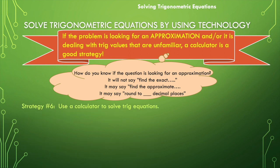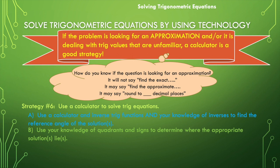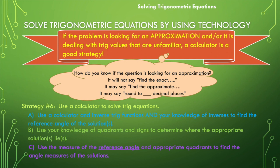So how do we go about this process? First, we will use a calculator and inverse trig functions and our knowledge of inverses to find the reference angle of the solution. Second, we're going to use our knowledge of quadrants and the signs of the trig functions to determine where the appropriate solutions lie. Third, we will use the measure of the reference angle and our knowledge of those appropriate quadrants to find the angle measures of our solution. And last, we will always use a calculator to verify our solution's work. This is going to give you peace of mind that your answers are actually correct.